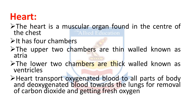So students, aaj humne padha hai heart ke baare mein: hamaara dil ek muscular organ hai jo hamaari chhaati ke darmiyaan mein paaya jaata hai. Iske chaar khaane hain — upar waale do khaane patli deewaroon waale hain, unhe kehte hain atria, aur neeche waale do khaane moti deewaroon waale hain, unhe kehte hain ventricles. Dil ka kaam hai oxygenated blood ko body parts ki taraf aur deoxygenated blood ko lungs ki taraf transport karna. Ab hum heart ki diagram ko discuss kar lete hain.